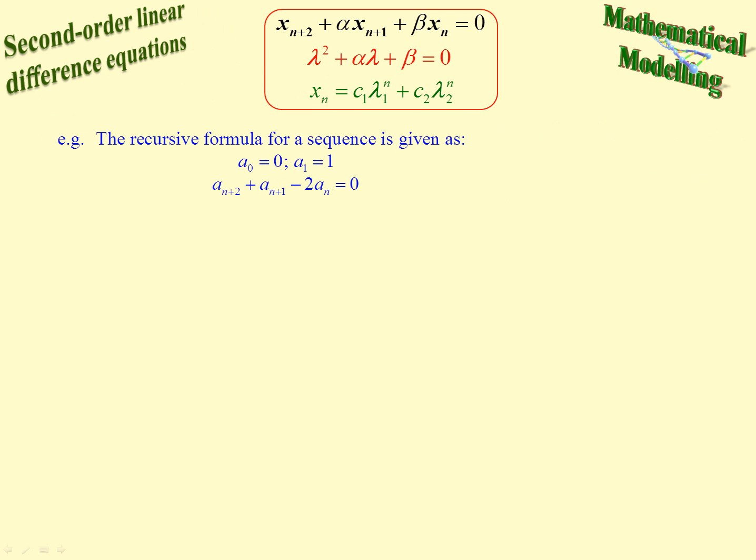So here's an example. Recursive formula for a sequence given as a sub 0 equals 0, a sub 1 equals 1, and a sub n plus 2 plus a sub n plus 1 minus 2a sub n equals 0. So it's homogeneous. This uses a's where that is x but we can easily draw the parallels.